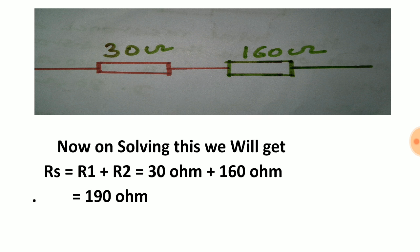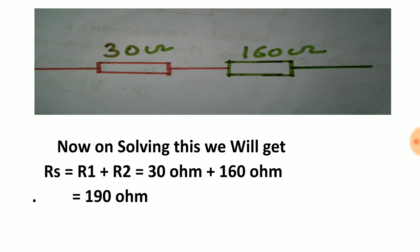Now our formula for series combination is we have to add the resistance of resistors in series combination, so 30 plus 160 will give 190 ohm. Now let us see our option choice. Our option choice C contains 190 ohm, so our answer is 190 ohm, option C.